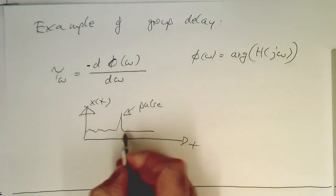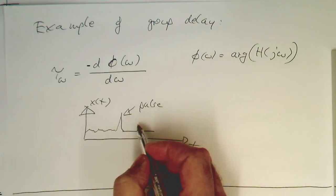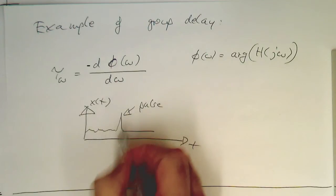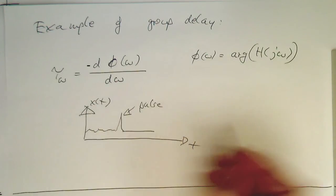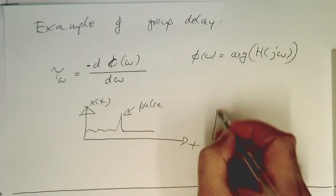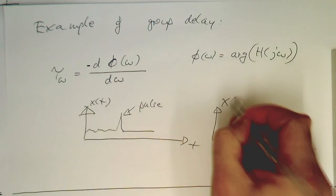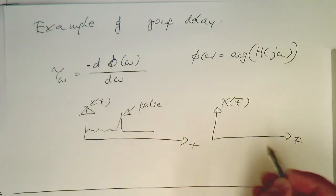In the frequency spectrum, this pulse contains loads of different frequencies. Ideally a delta pulse contains all frequencies, but this is a wider pulse, so it will contain a certain wide frequency spectrum. Our x of f will probably look quite wide like this.